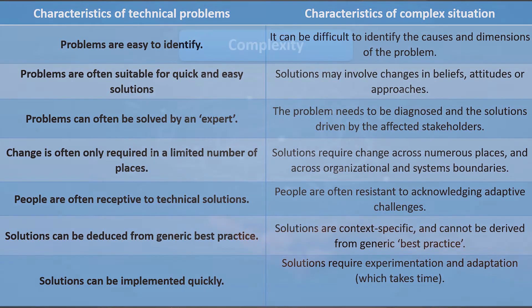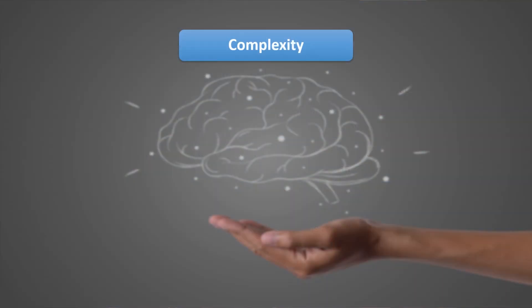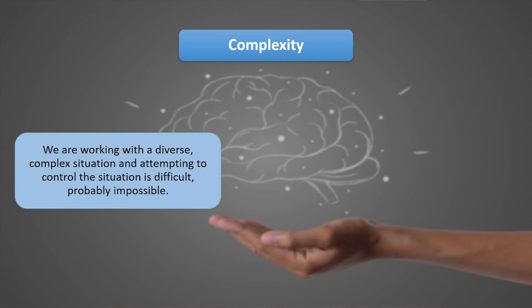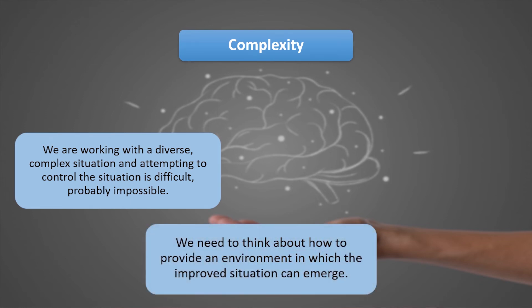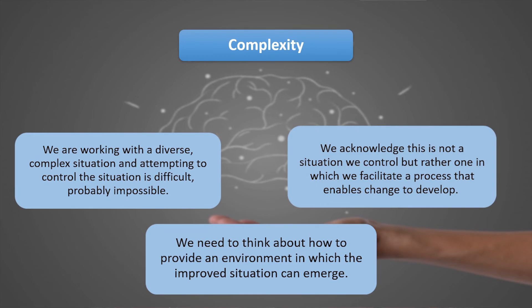Therefore, in complexity, we have to have a systems approach. It's a diverse situation we can't control. We need to think about how to provide an environment where an improved situation can emerge. We have to acknowledge we cannot control it but can only facilitate a process — and that process, dear learners, is a learning process.